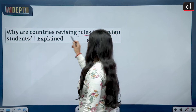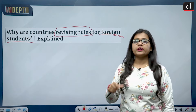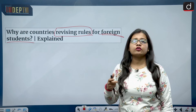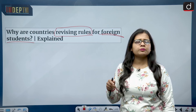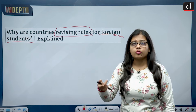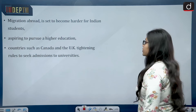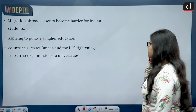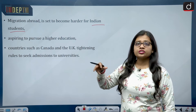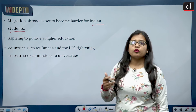Why are countries revising their rules for foreign students? Imagine a student from India, after completing Class 12, goes to another country to pursue a bachelor's degree — in medicine, engineering, or any honors program. Students have aspirations of going abroad and getting degrees from really good universities. What is in the news is that migration abroad is said to become harder for Indian students because of certain changes — migration to countries like Canada, UK, or the US will now be more difficult for those aspiring to pursue higher education.